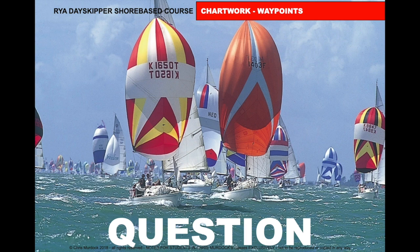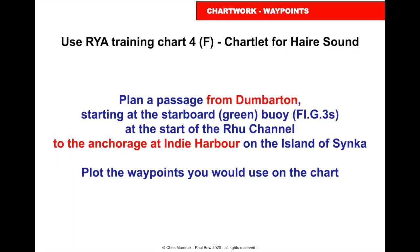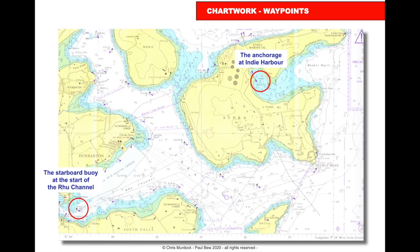Let's work through a question. Using RYA training chart four F, which is the chart for Hare Sound, plan a passage from Dumbarton — starting at the starboard green buoy flashing green every three seconds at the start of the route channel — to the anchorage at Indy Harbour on the island of Zinka. Plot the waypoints you'd use on the chart.